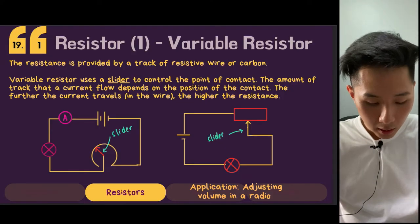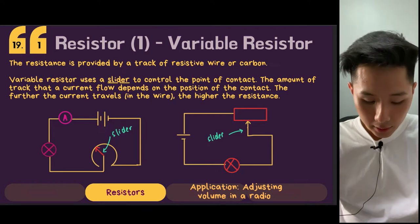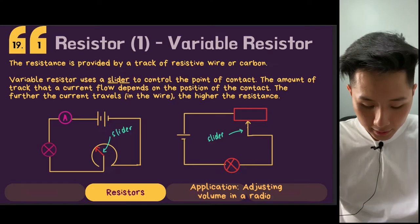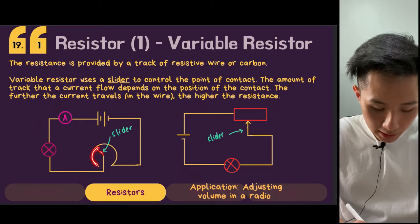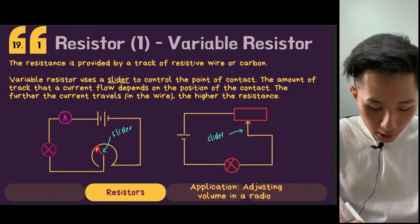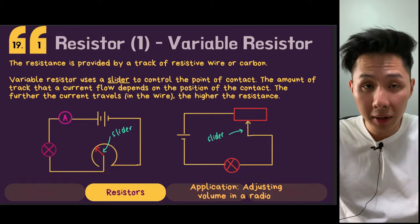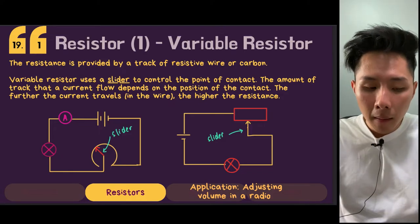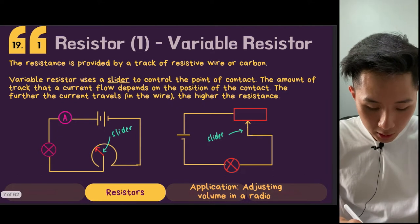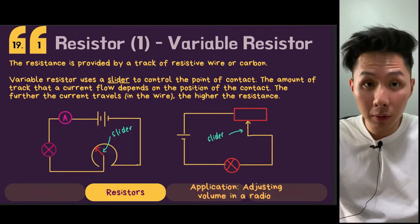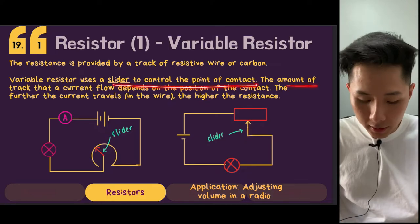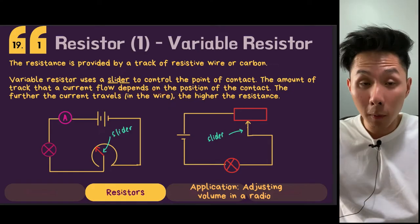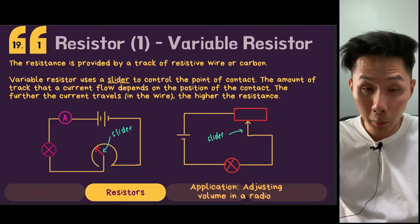The slider controls the length of wire through which current flows. Looking at these two diagrams — when you move the slider from the left to the right-hand side, the position of the pointer determines how much current is flowing in the circuit based on the length of wire. As we learned in the last chapter, the longer the wire, the higher the resistance. So by changing the contact point of the slider, we can change the resistance of the circuit.